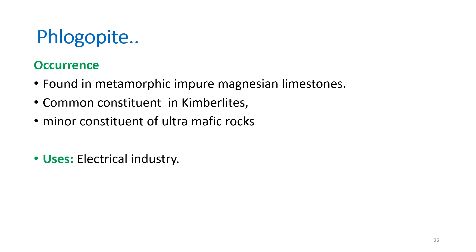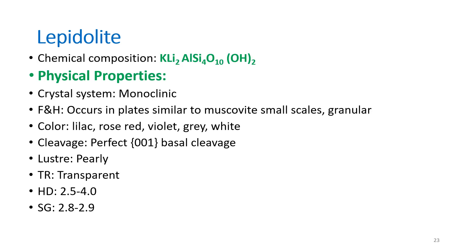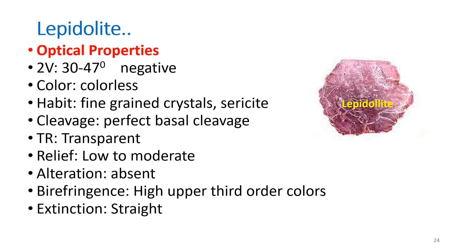Phlogopite is used in the electrical industry. Lepidolite contains lithium — chemical composition: KLi₂Al(Si₄O₁₀)(OH)₂, also known as lithium mica. Crystal system: monoclinic; habit: platy like muscovite, sometimes granular. Its characteristic color is lilac, though it also occurs in rose-red, violet, gray, and white.